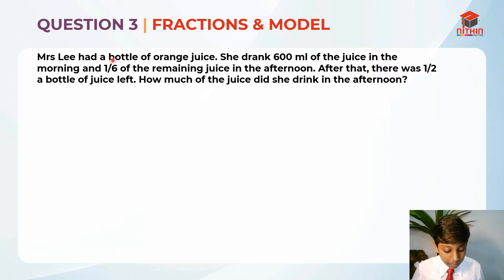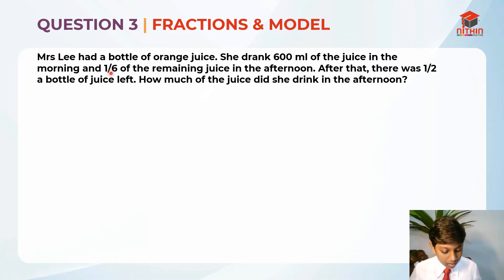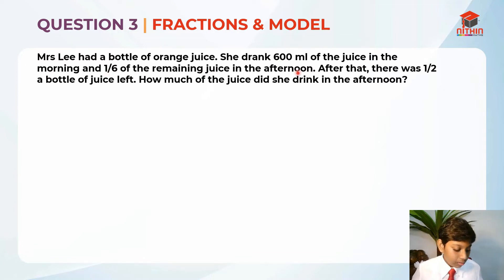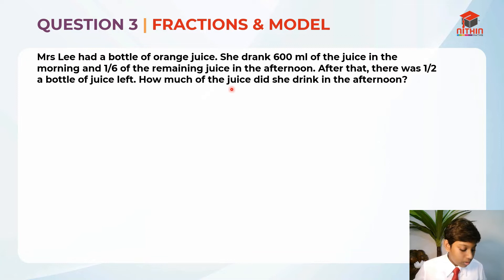Mrs. Lee had a bottle of orange juice. She drank 600ml of the juice in the morning and 1/6 of the remaining juice in the afternoon. After that, there was half a bottle of juice left. How much of the juice did she drink in the afternoon?